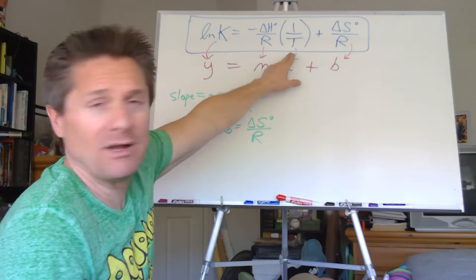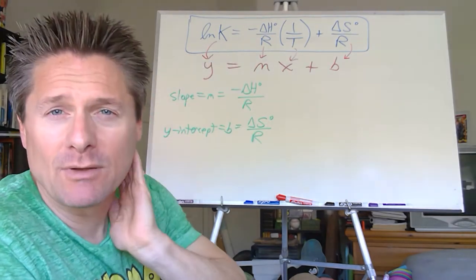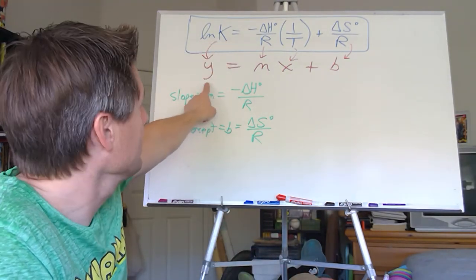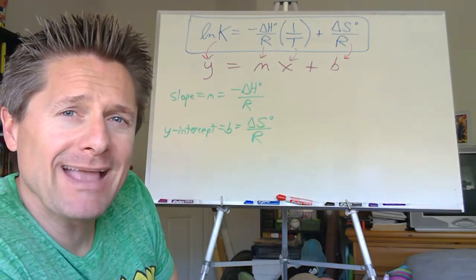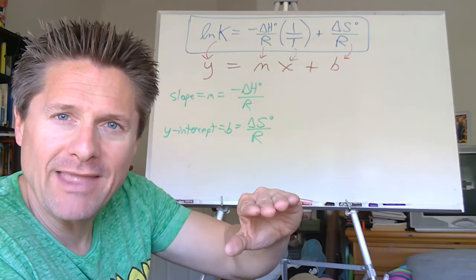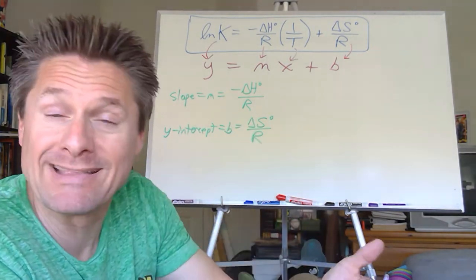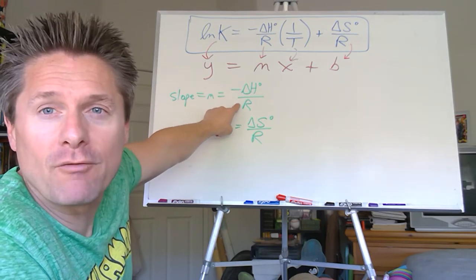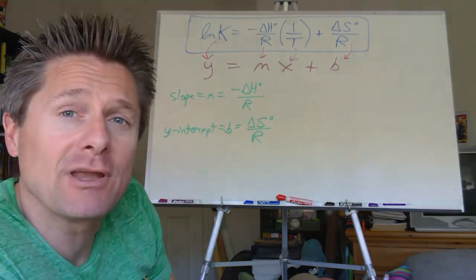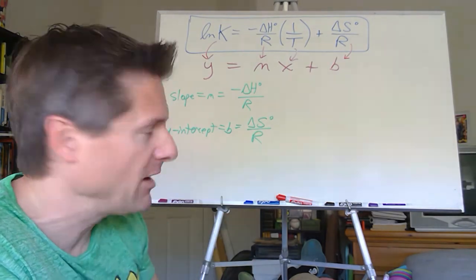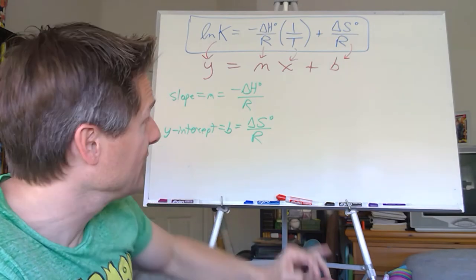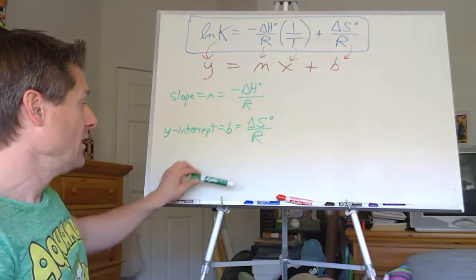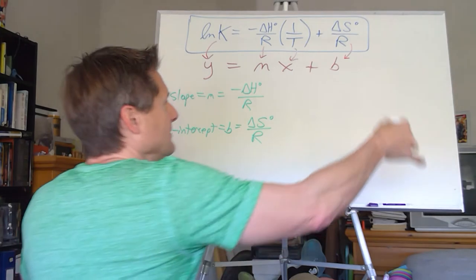So if in lab you measured equilibrium constants at a whole bunch of different temperatures, you could plot ln K on the y-axis and 1/T (in inverse Kelvin) on the x-axis — the equilibrium constant depends on temperature, so it's the dependent variable on the y-axis. The slope of that line gives you –ΔH°/R, letting you calculate the standard enthalpy change. The y-intercept gives you ΔS°/R, letting you calculate the standard entropy change.